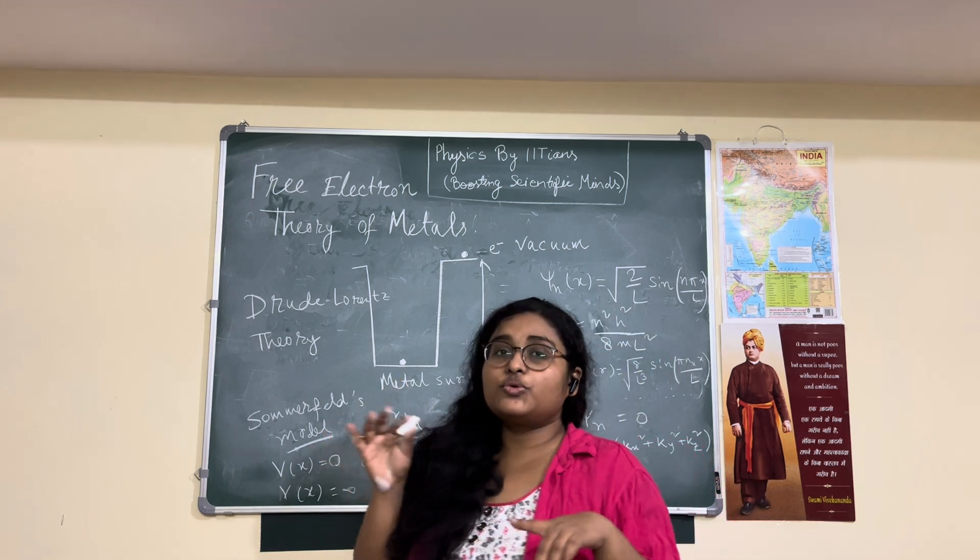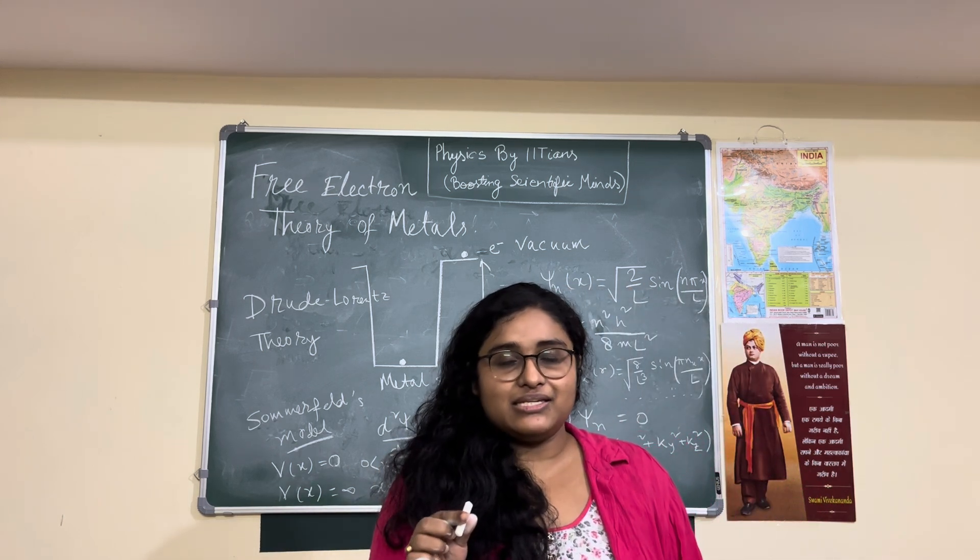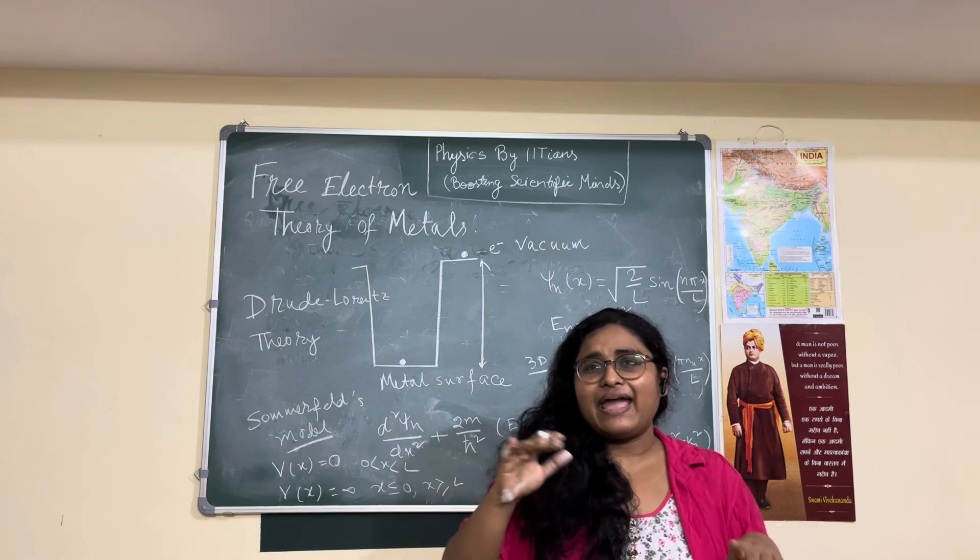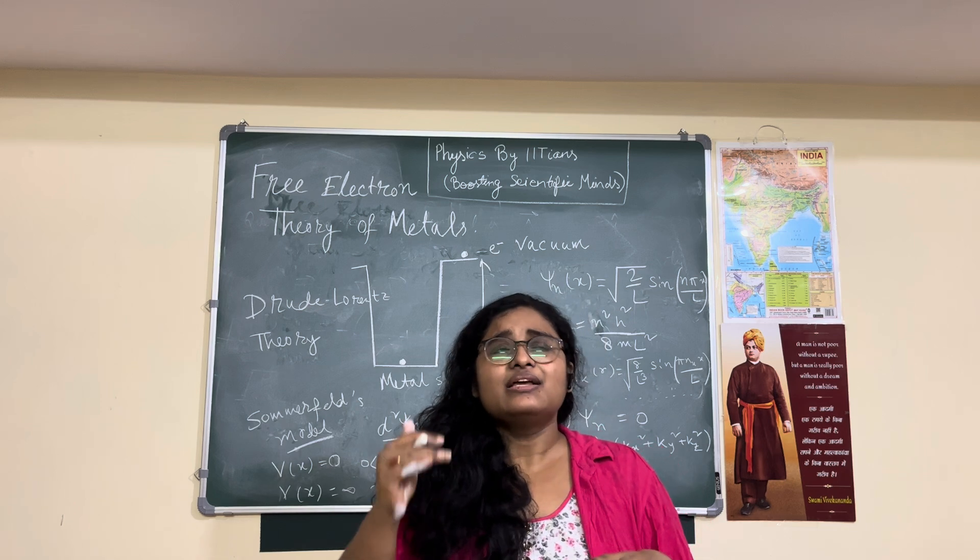So Drude crudely approximated that the electrons which are responsible for the conductivity of the metal are actually free, and they can make a gas of free electrons on the metal. They are somehow bound to the metal that they are not going outside of the surface.